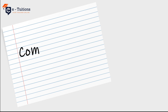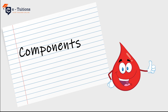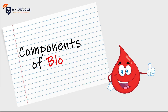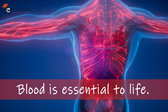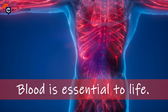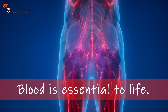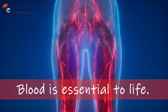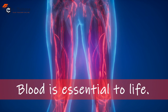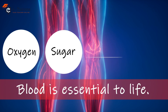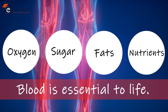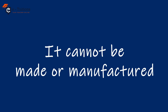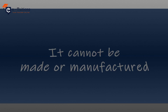Hello kids, today we are going to learn about components of blood. Blood is essential to life. Blood circulates through our body and delivers essential substances like oxygen, sugar, fats and nutrients. Blood cannot be made or manufactured. It does not have any substitute.